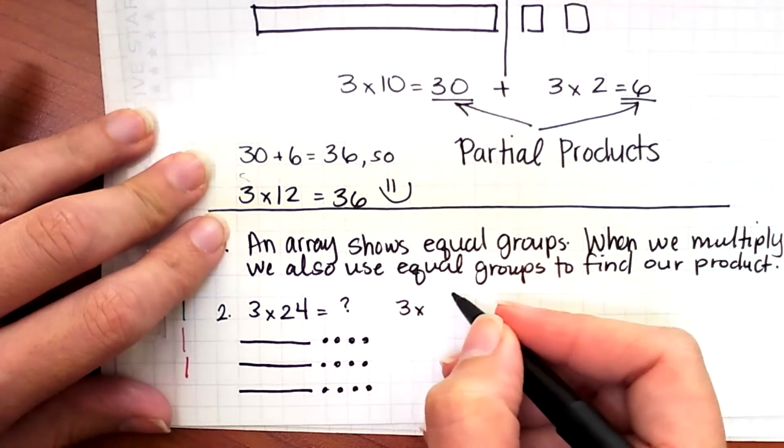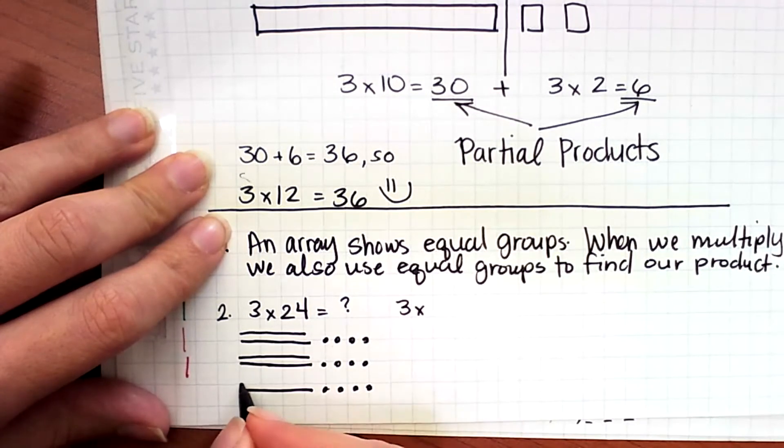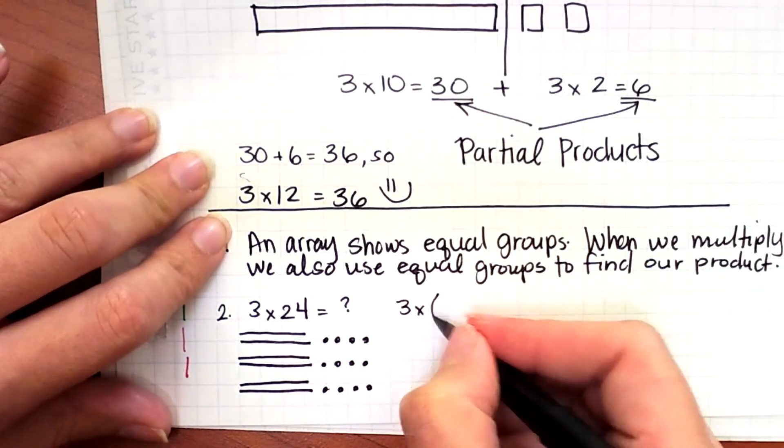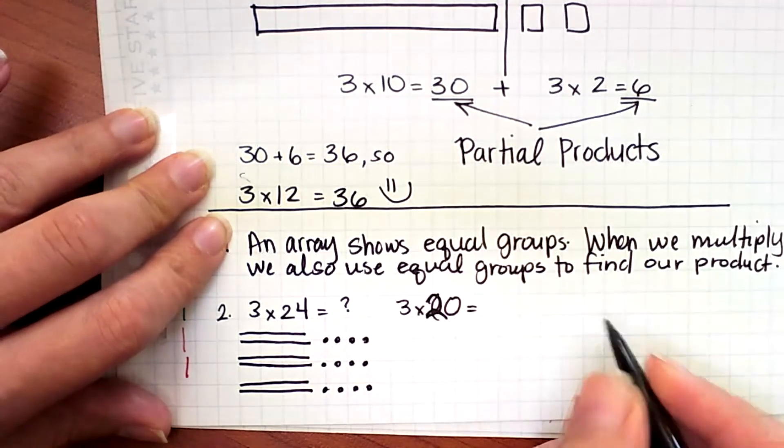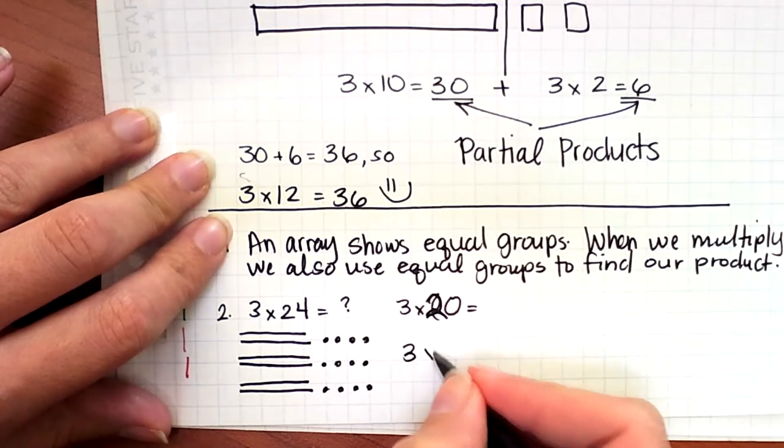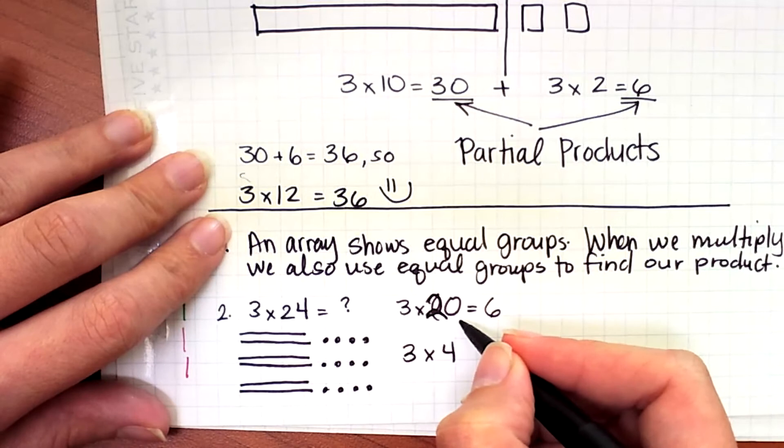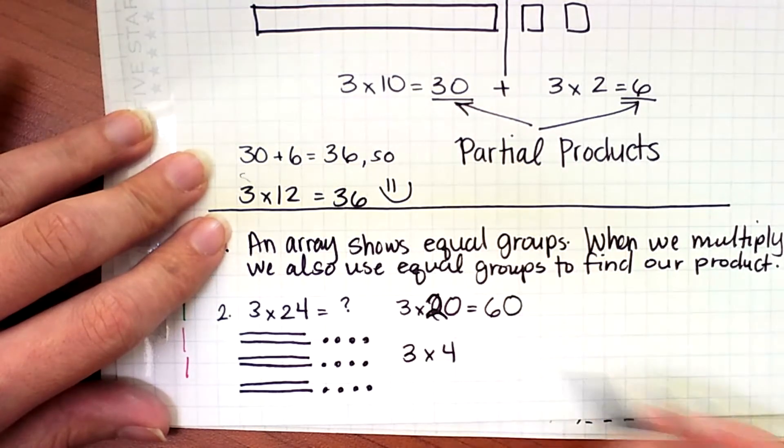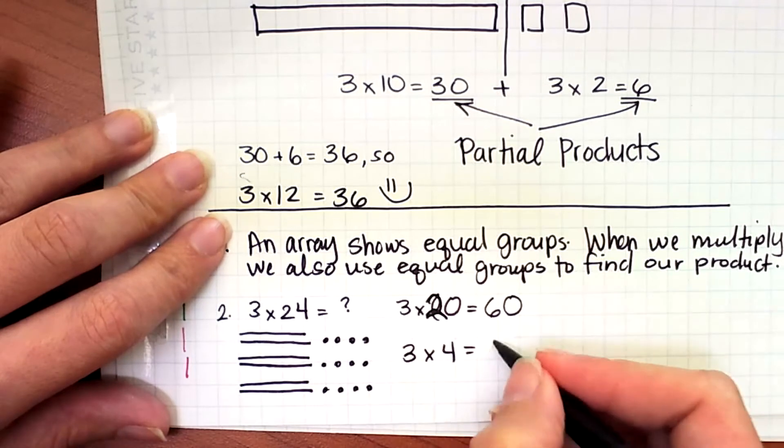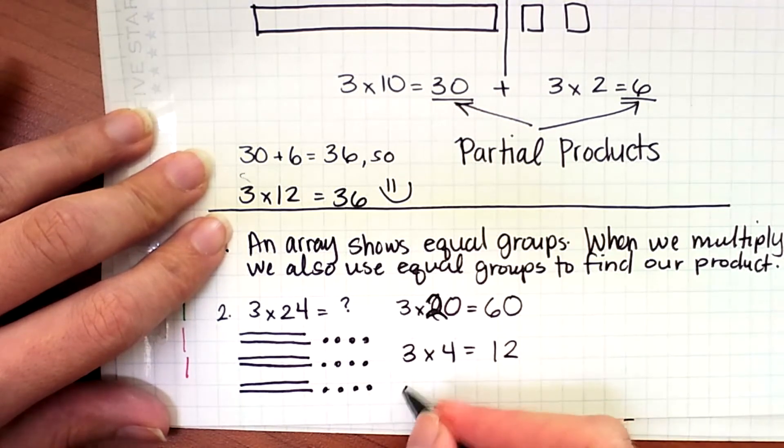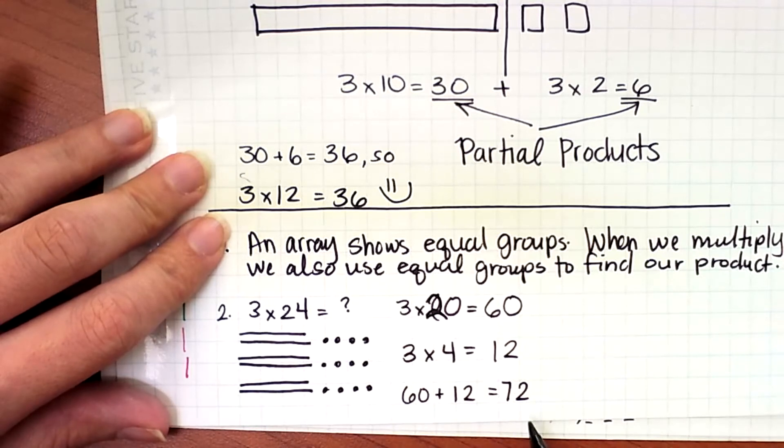I can do the 3 times the 20, and then I can do 3 times 4. So 3 times 20, we know 3 times 2 is equal to 6. When we're multiplying by multiples of 10, we add a 0 to the end of it. So that's 60. And then 3 times 4 is equal to 12. I need to combine my partial products. So 60 plus 12 is equal to 72. So I know 3 times 24 is equal to 72.